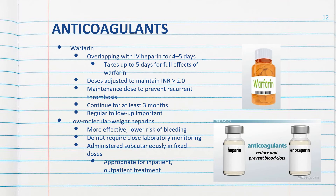We can also use low molecular weight heparins. They are more effective than Coumadin and have a lower risk of bleeding. They do not require close laboratory monitoring — the patient doesn't need to go to the lab for PT draws. We can administer them subcutaneously in fixed doses, so there's no need to titrate; we give a fixed dose appropriate for that patient both in and outside the hospital.